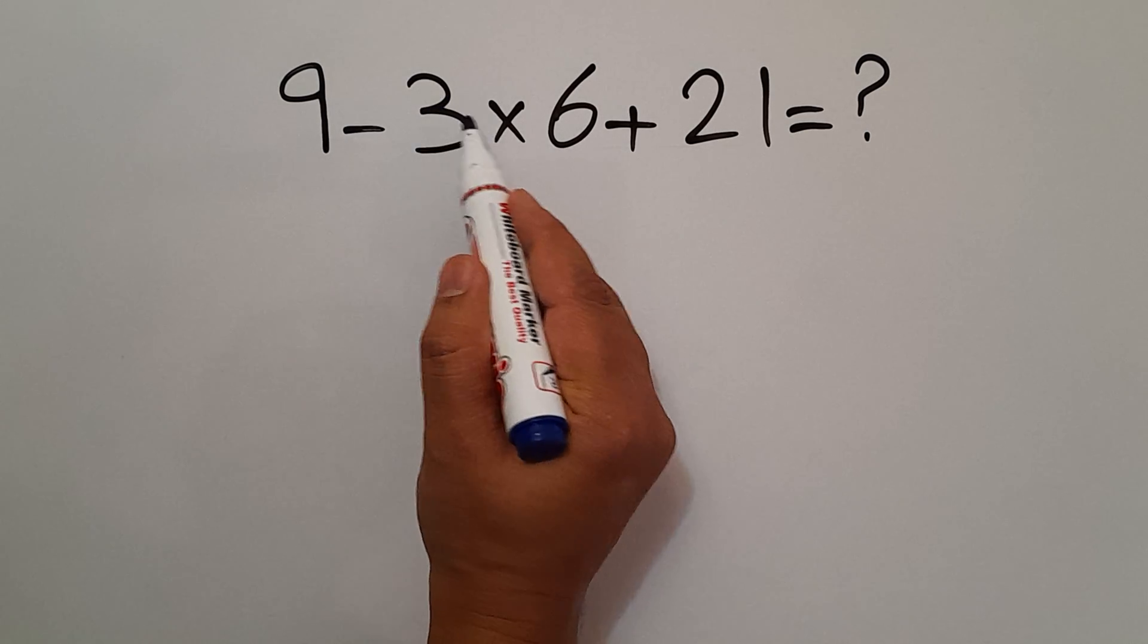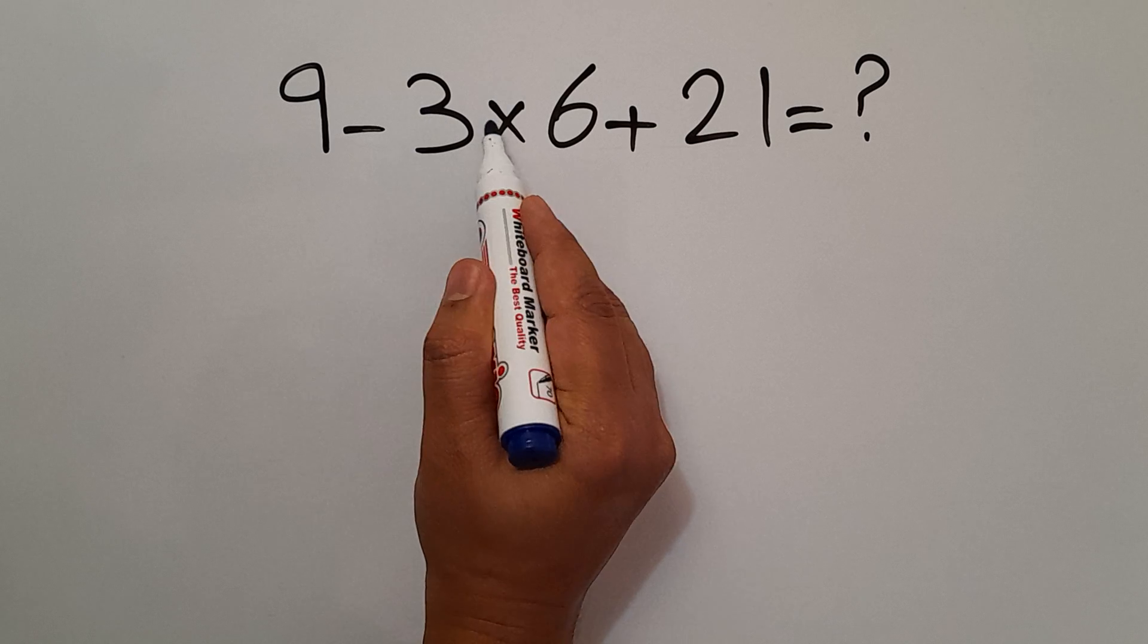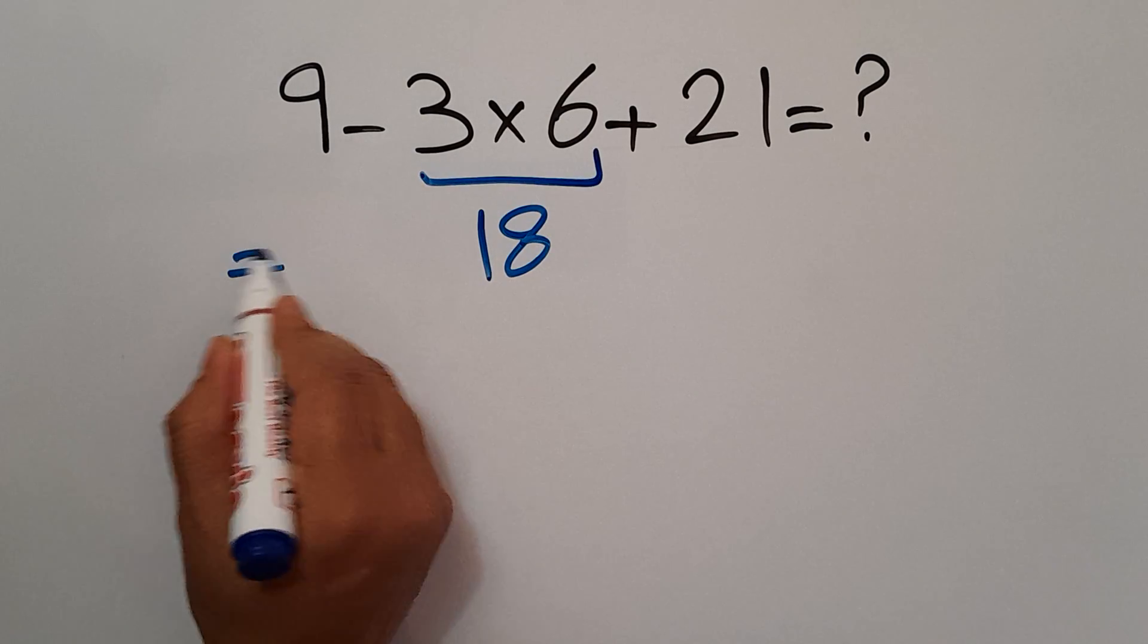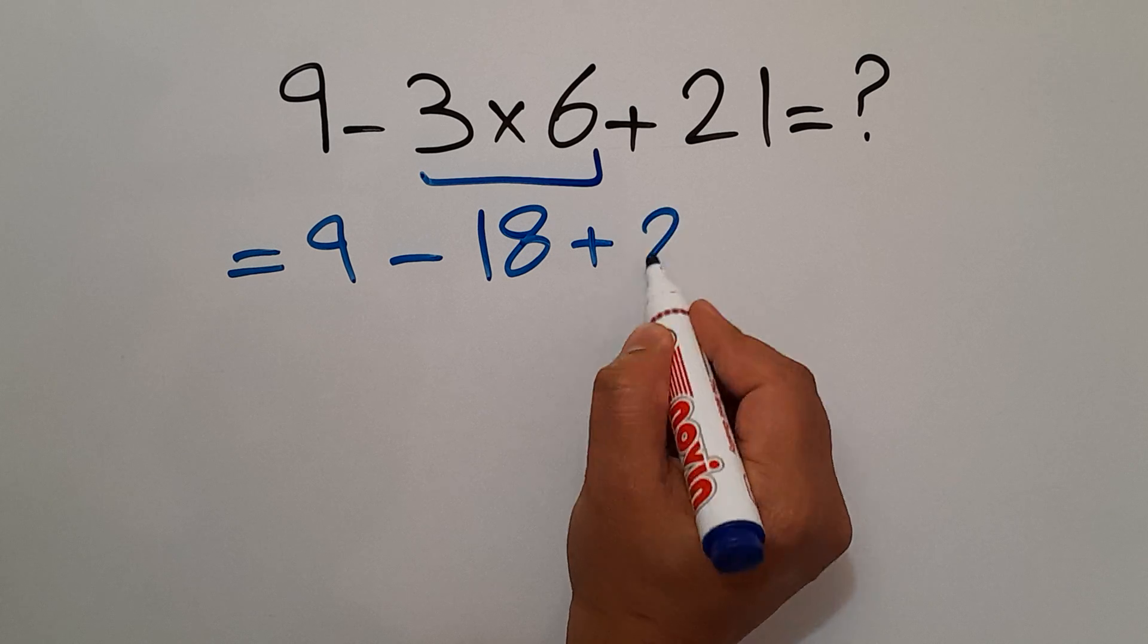So first, we have to handle this multiplication. 3 times 6 gives us 18. So we have 9 minus 18 plus 21.